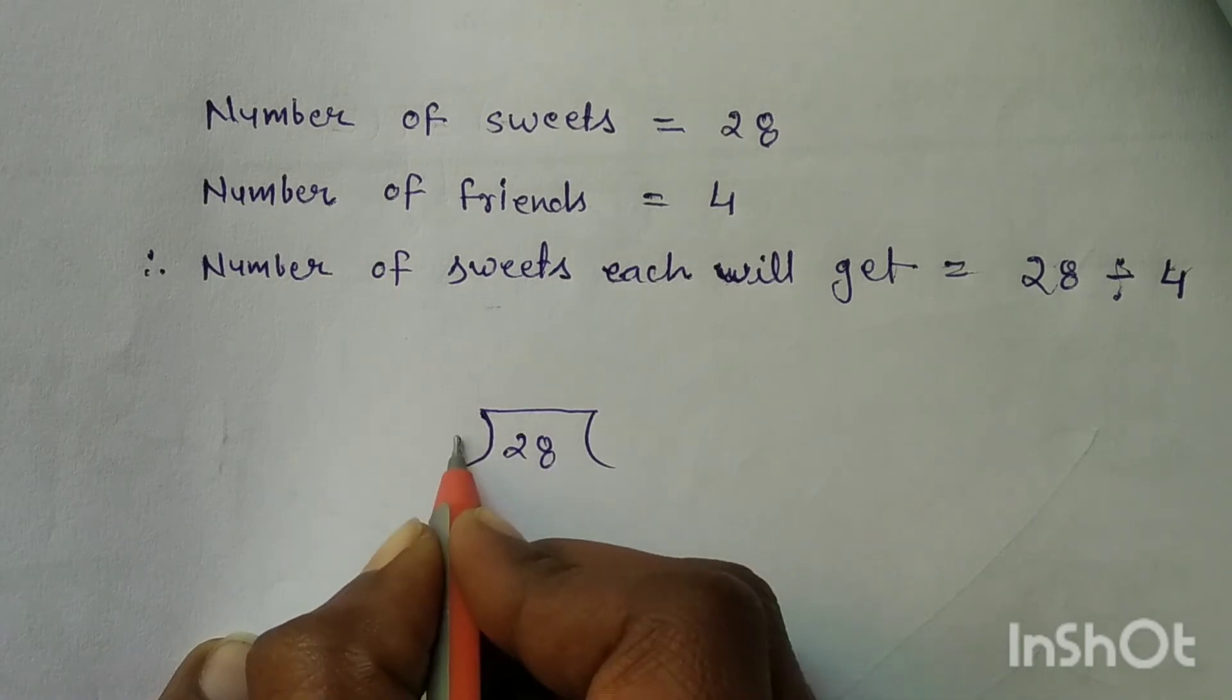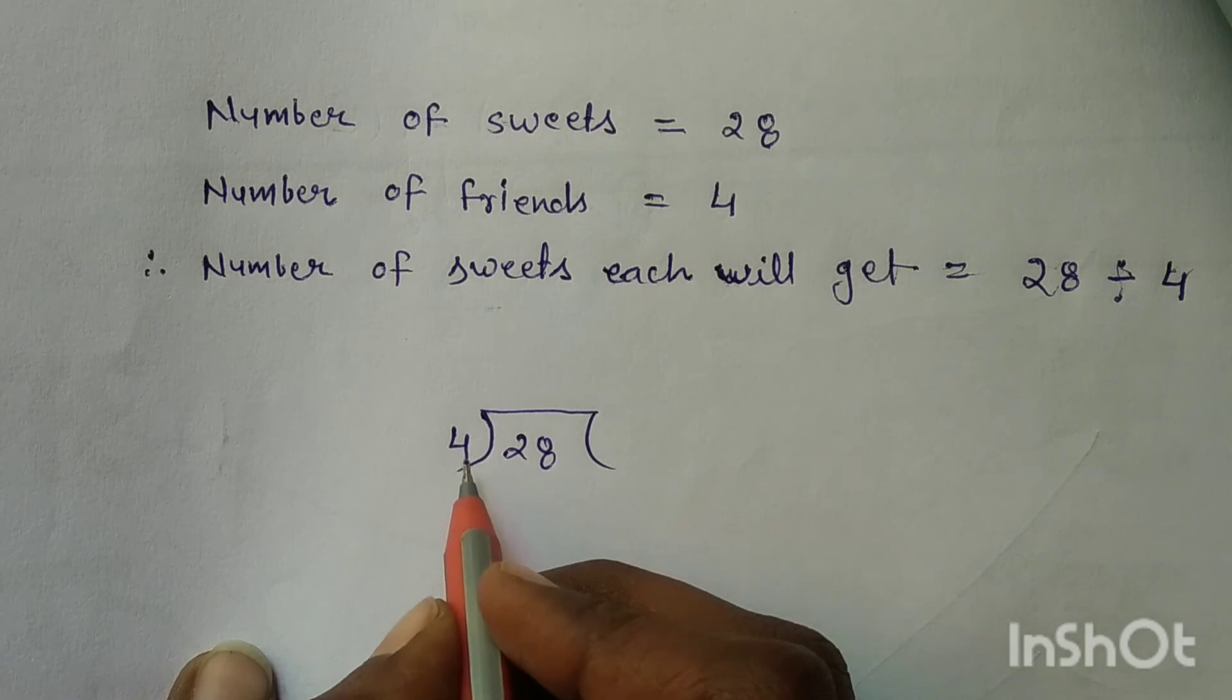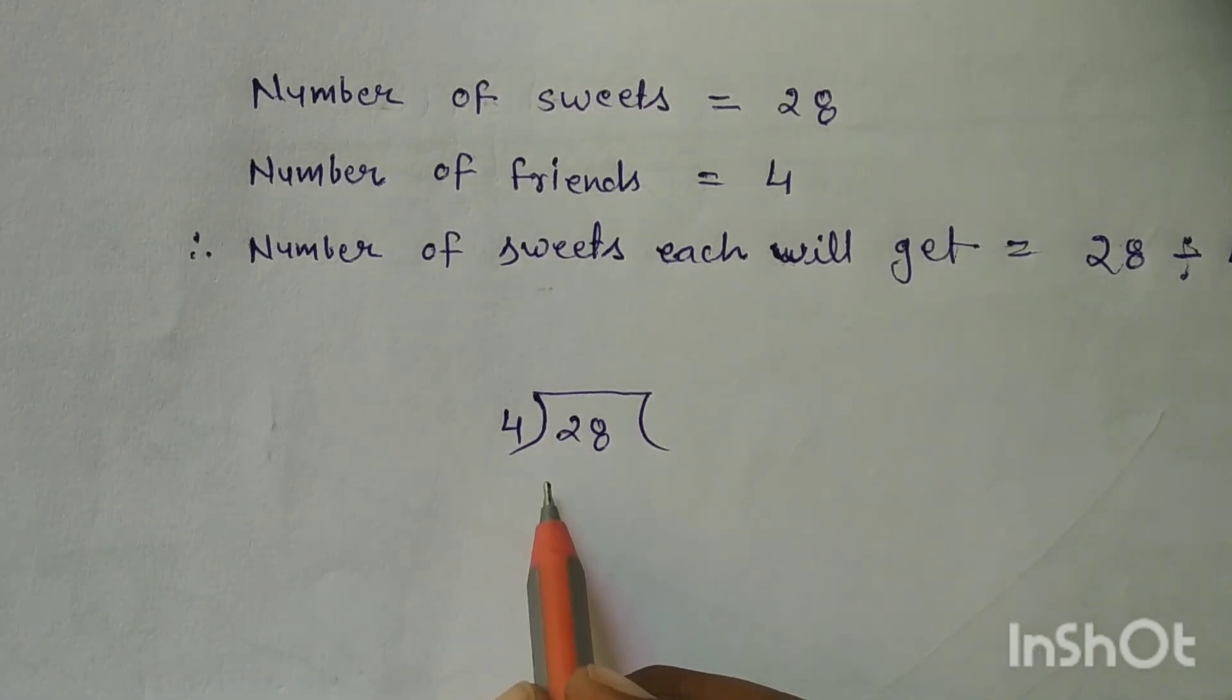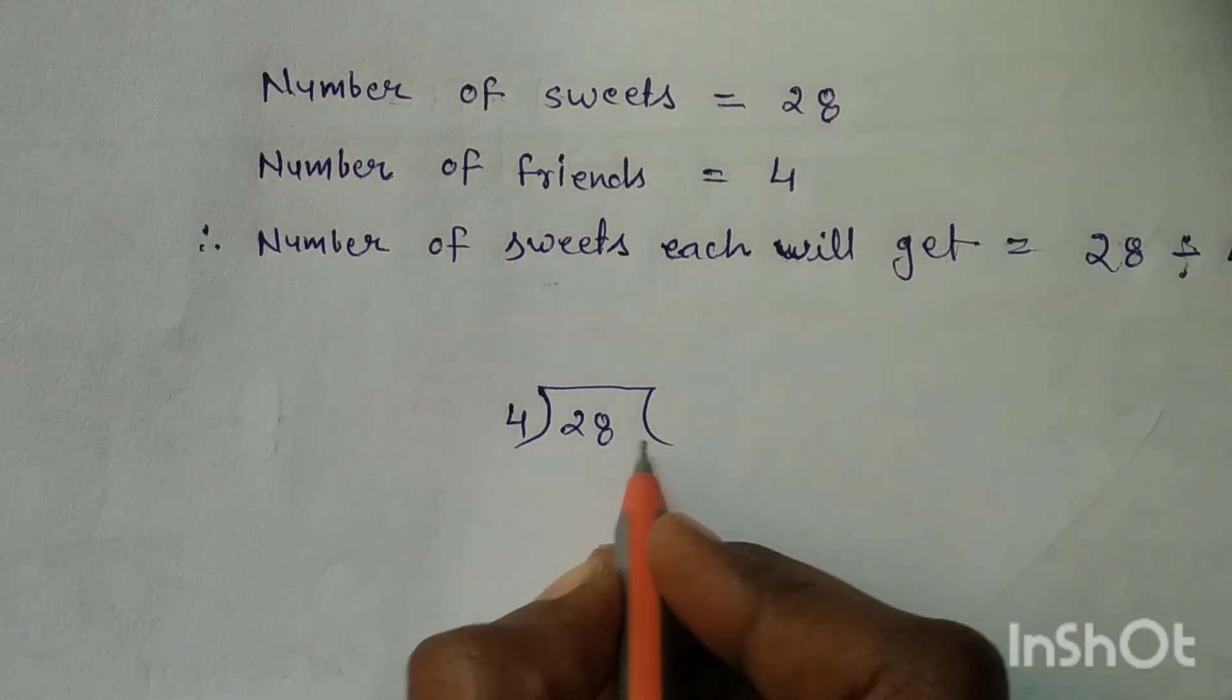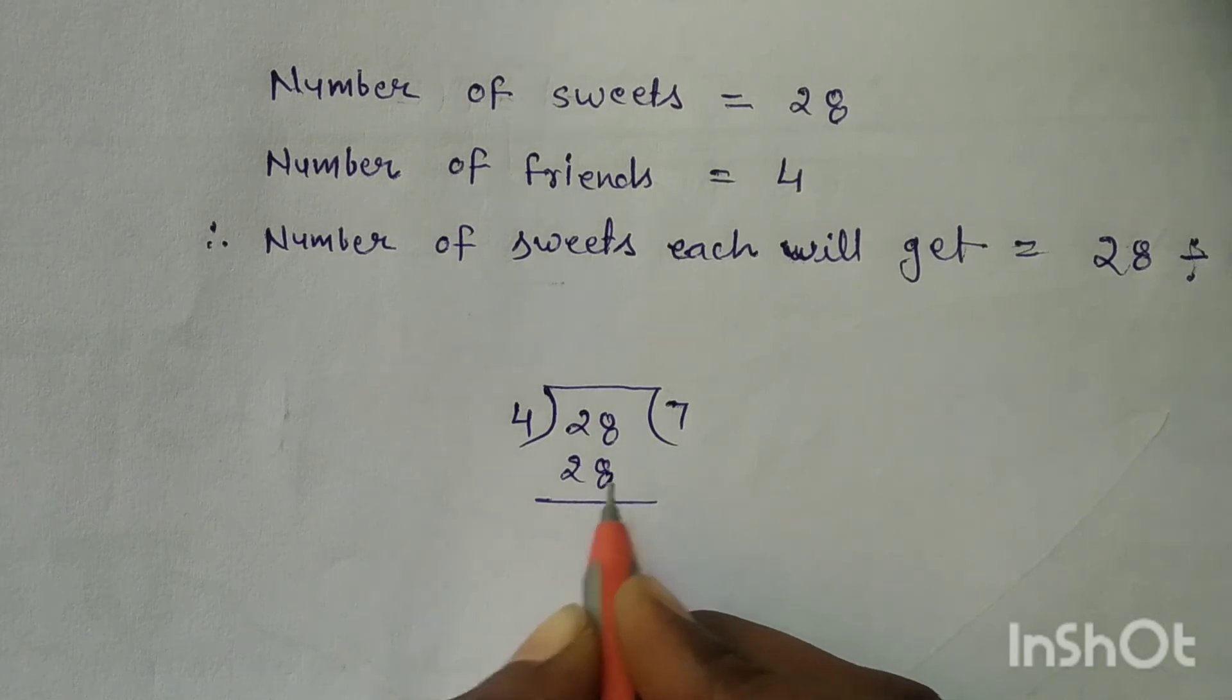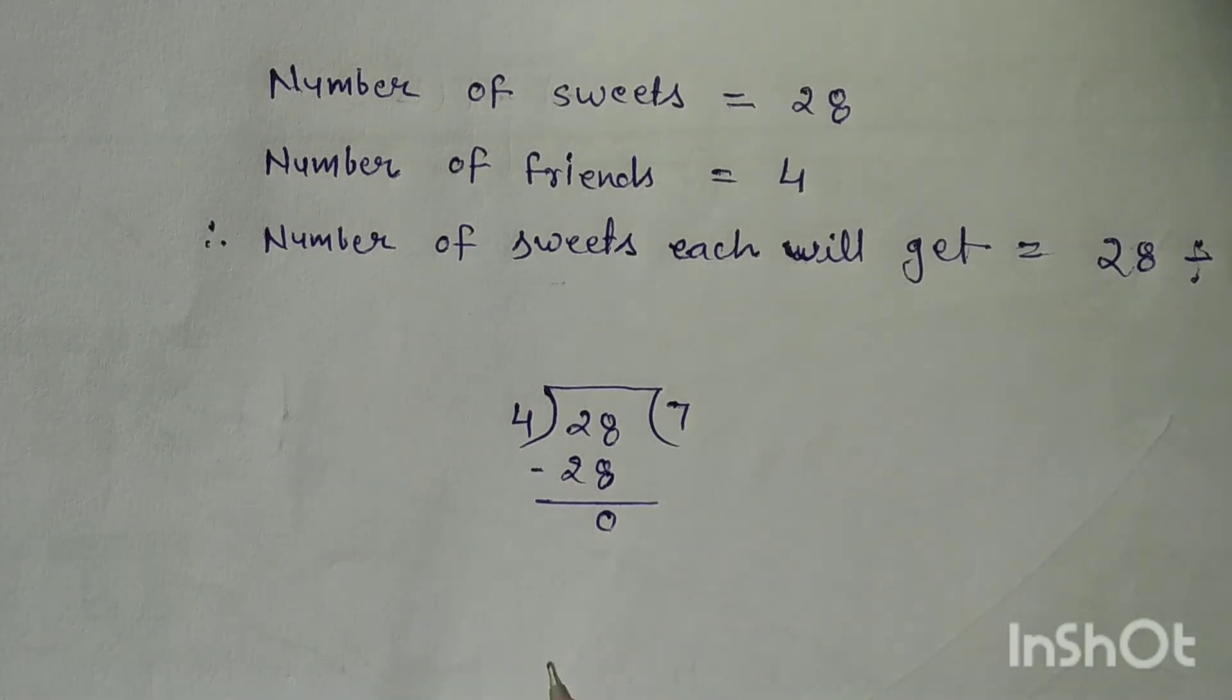28 divided by 4. 4 times 7 is 28. 28 minus 28 is equal to zero.